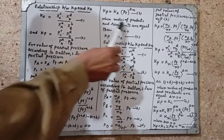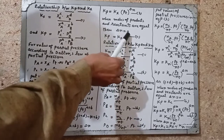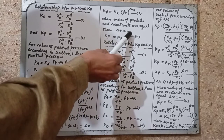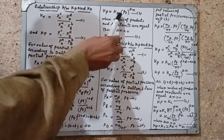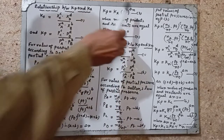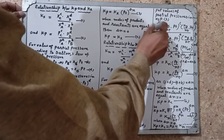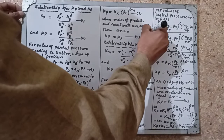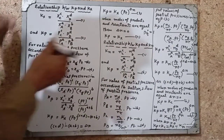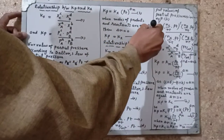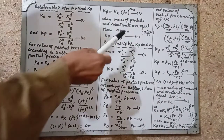When moles of products and moles of reactants are equal, delta n becomes zero, because it is the difference of moles of products and reactants. So Kp = Kx × PT^0. When any variable is raised to the power zero, it equals one. Therefore PT^0 = 1, and Kp = Kx.